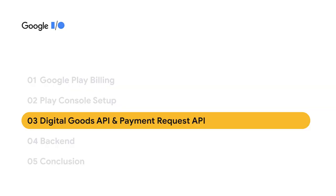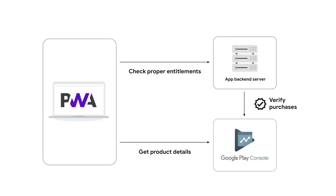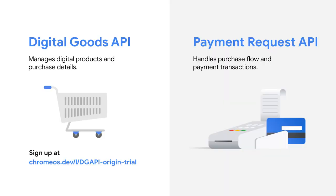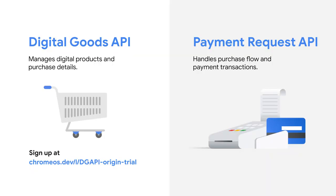Now I'm going to hand it off to Jeevan to talk about the two APIs you'll need to implement in your web app. Now that you've loaded up the Play Console with your excellent products, the next step is to use the Digital Goods API and the Payment Request API to enable your web app to start accepting purchases. The Digital Goods API manages digital products and facilitates in-app purchases for web applications. Note that the Digital Goods API is currently under an Origin trial, so make sure to sign up at the provided link before trying out the API. The API can change, so make sure to read the documentation if you come across something unexpected. The Payment Request API makes use of the information the Digital Goods API manages and handles the payment transactions to make a purchase.